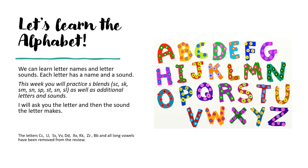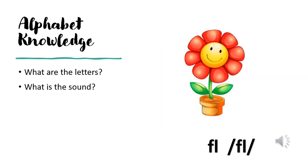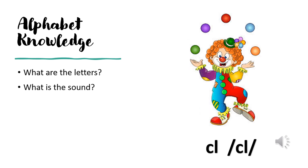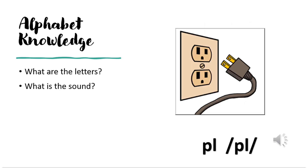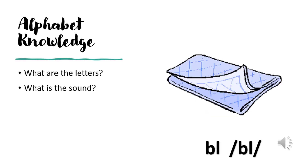What are the letters? F-L. What are the sounds? F-L. What are the letters? C-L. What are the sounds? C-L. What are the letters? P-L. What is the sound? P-L. What are the letters? B-L. What is the sound? B-L.